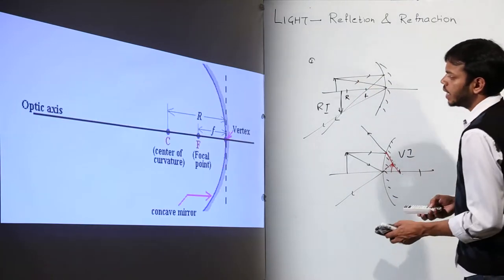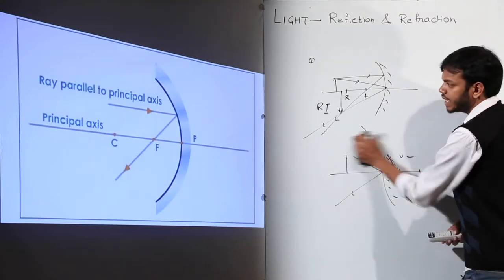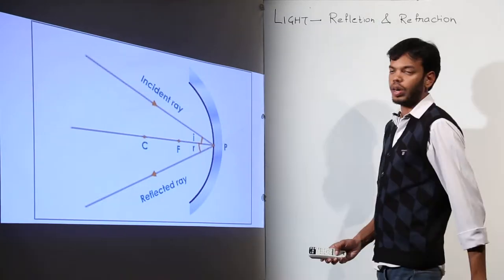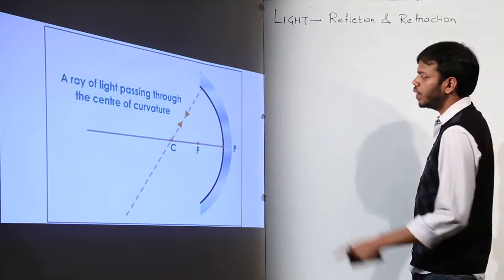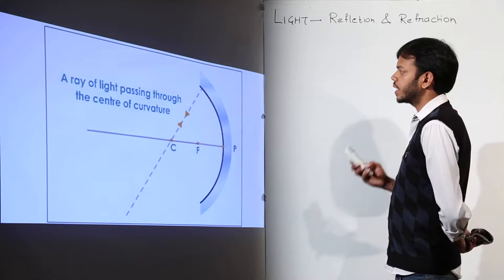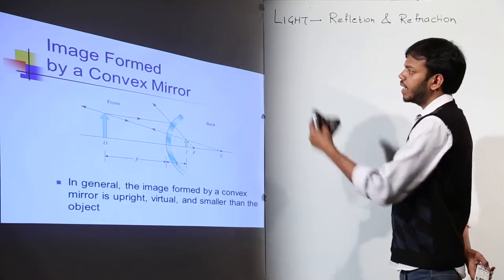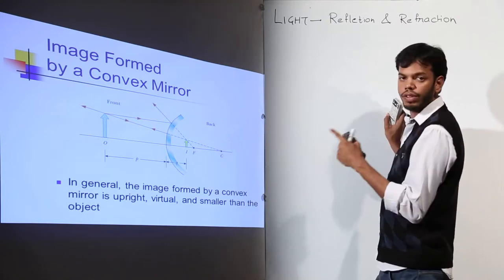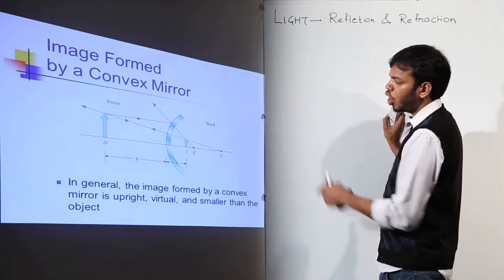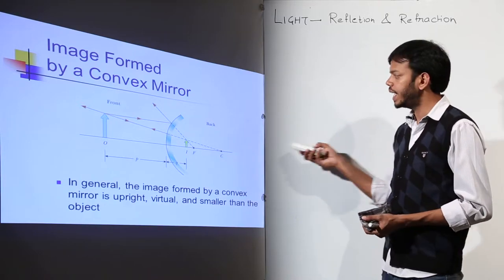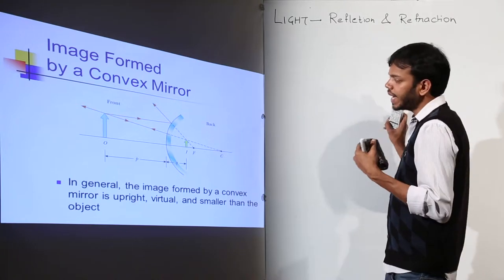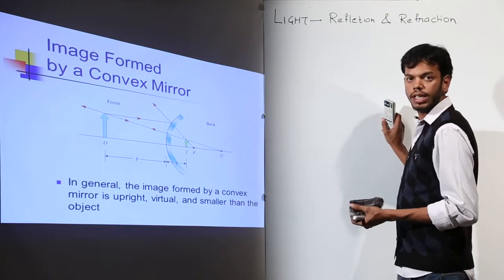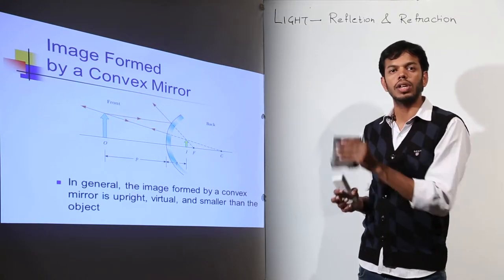To summarize the three rays: ray one, coming parallel to the principal axis, passes through focus. Ray two, incident at the pole, reflects at the same angle — angle i equals angle r. Ray three, passing through the center of curvature, retraces its path, deflected back 180 degrees. It doesn't matter which two rays you use; any two will give you the correct ray diagram.